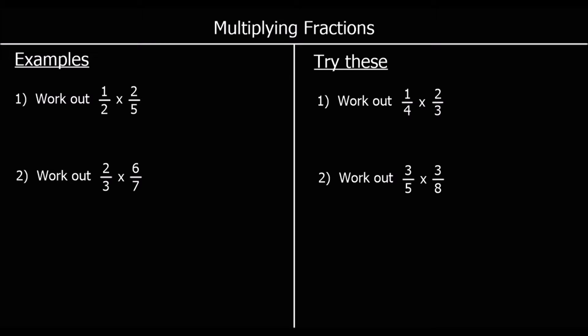To multiply fractions, we multiply the numerators together and we multiply the denominators together. So we multiply the two numbers on the top and we multiply the two numbers on the bottom.